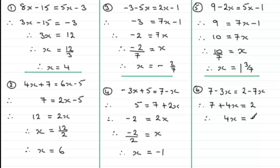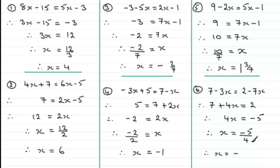On the right, 2 take away 7 is minus 5. I then divide both sides by 4: 4x divided by 4 leaves x, and minus 5 divided by 4 gives minus 5 over 4. A minus divided by a positive is minus overall, so x = −5/4. Since 4 goes into 5 once with 1 left over, that's x = −1 and 1/4.